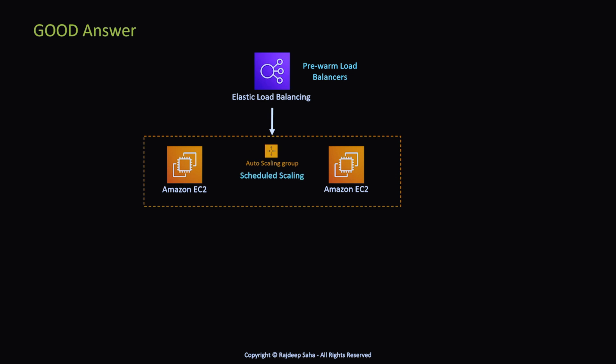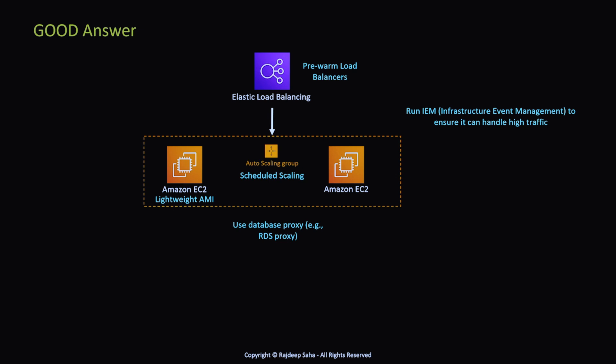You should also use scheduled scaling in your Auto Scaling Group if you know a big event is coming. Ensure that EC2 AMIs are lightweight, because the more unnecessary libraries you bake in, the longer it takes to provision new instances. Also use a database proxy — when the application scales fast, the database creates and terminates many connections, leaving orphan connections that stress the database. Using RDS Proxy between your application and the database helps manage all those connections.